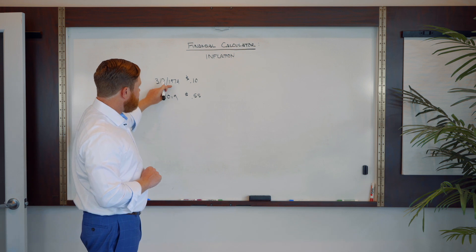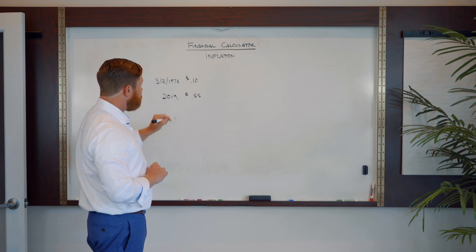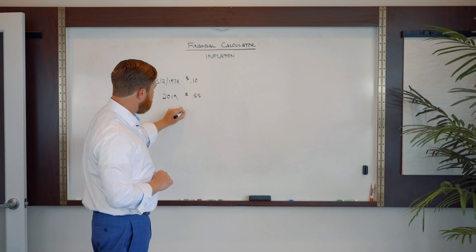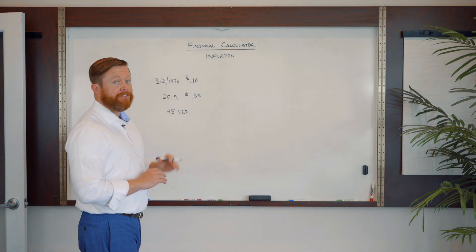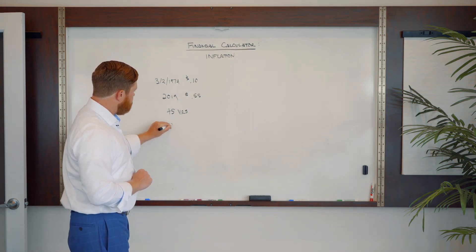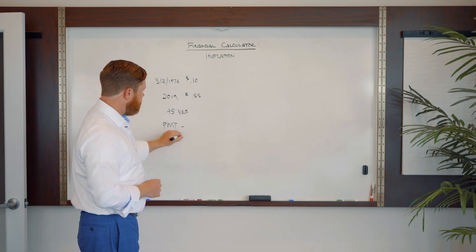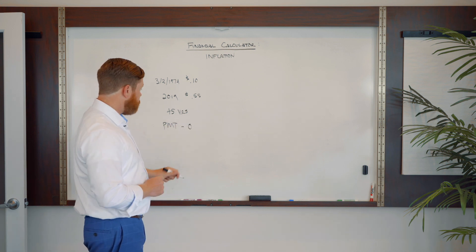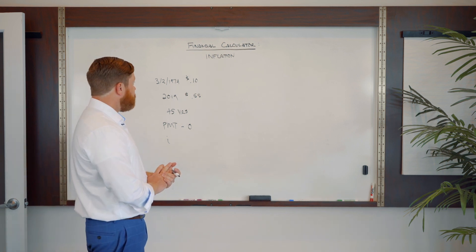From 1974, we now need to calculate how long this timeframe is to 2019. We can say 45 years, and that's going to be our number of periods to start calculating what this inflation rate or interest rate is. And the other thing that we know is, is there a payment that is going to compound into this calculation? And the answer there is no. So we're going to have zero there. So the question we're trying to solve is what is our interest rate, which would be our inflation.